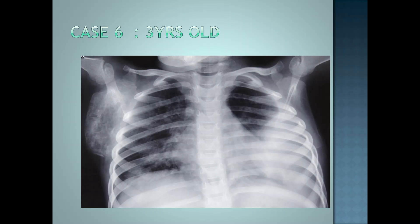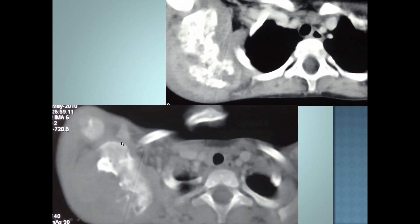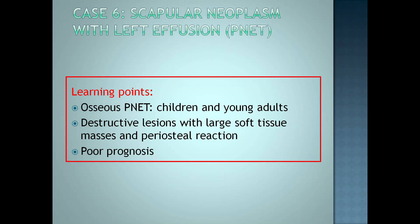This is the sixth case — a 3-year-old child. The most obvious abnormality is a large effusion on the left side, and the scapula also shows abnormality: it is enlarged and shows a permeative type of lytic destruction with expansion. Contrast-enhanced CT shows extensive cortical destruction on both sides associated with a large soft tissue mass. The diagnosis is an aggressive or malignant scapular neoplasm. Biopsy confirmed Ewing's sarcoma. Osseous Ewing's sarcoma can affect children and young adults. These are destructive lesions with large soft tissue masses and periosteal reaction, associated with poor prognosis.